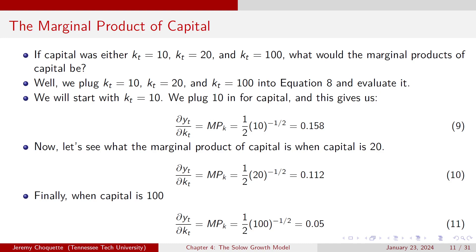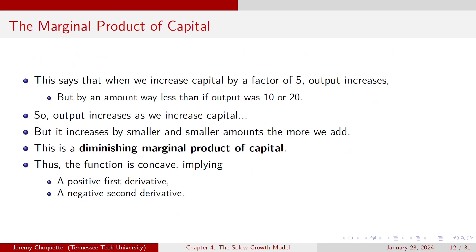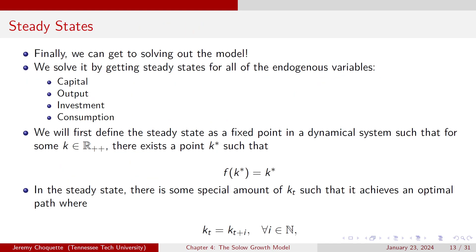The more capital you put in, you'll always get more output, but output increases by less and less each time. If we increase capital by a factor of 5, output increases but by an amount that's far less than if capital were at 10 or 20. Output increases as we add capital, but by smaller and smaller amounts — this is the diminishing marginal product of capital. The function is concave, which implies a positive first derivative and a negative second derivative.